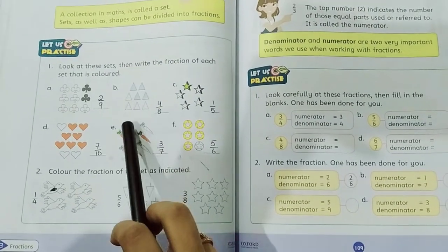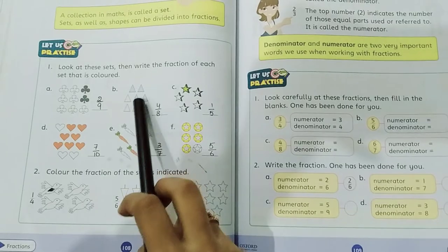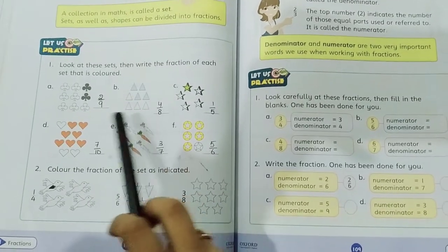B: here we have 8 triangles total and shaded is 4, so 4 by 8 as it is.